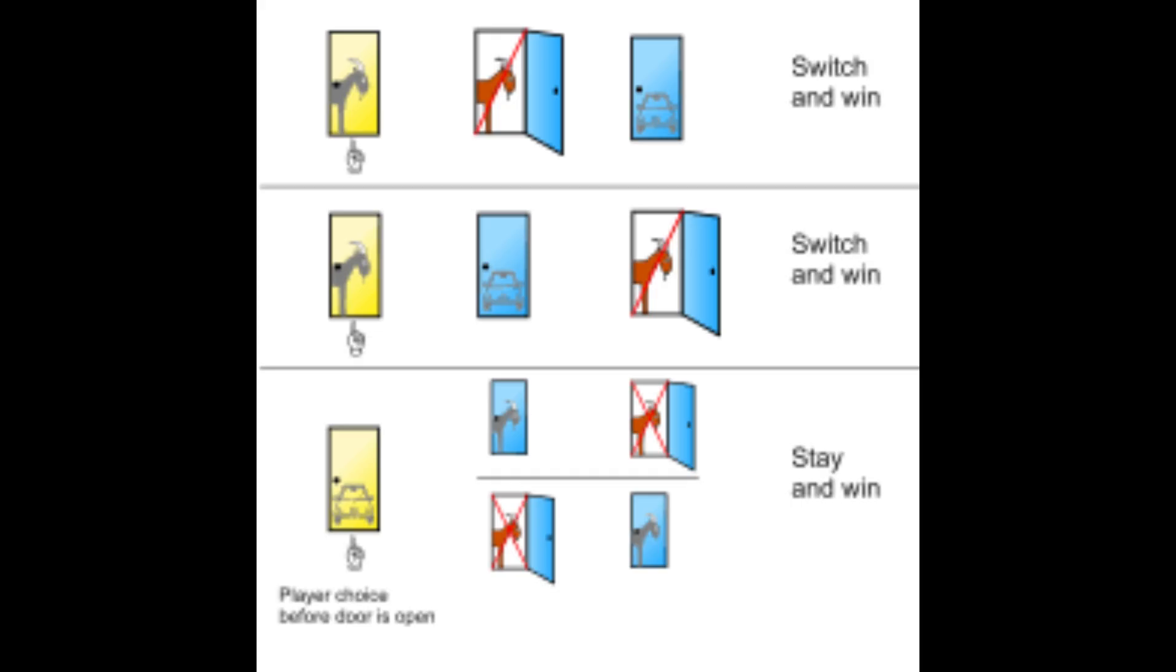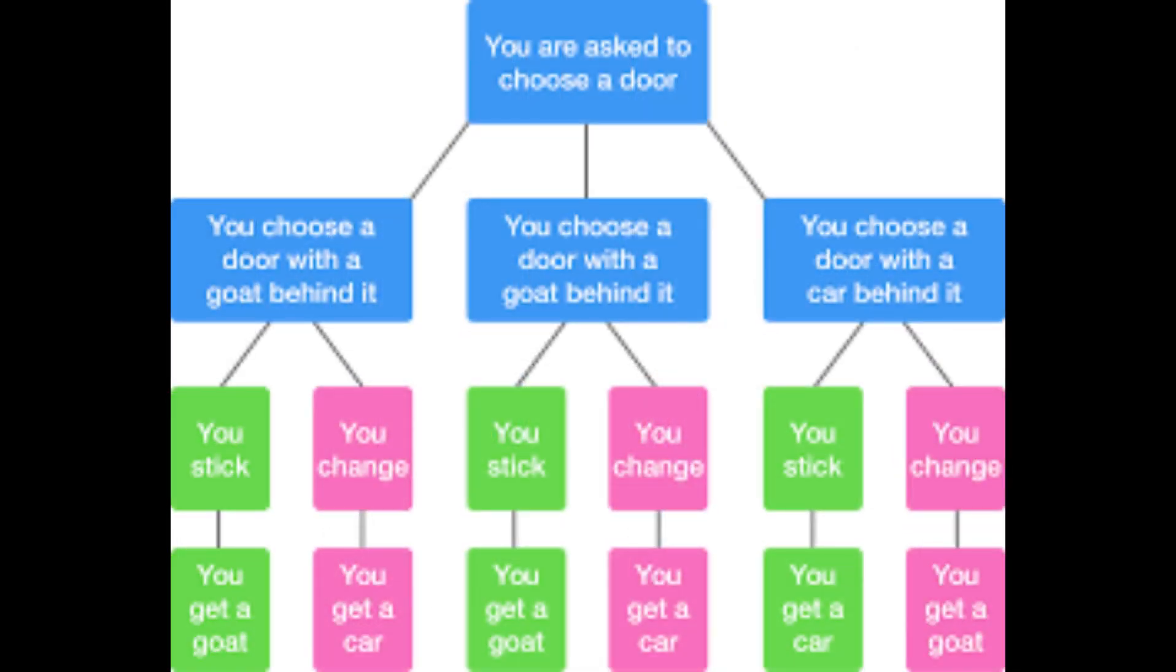In other words, by switching, you take advantage of the 66.67% chance that you originally chose a goat. This is why the counterintuitive yet correct strategy is to always switch doors.